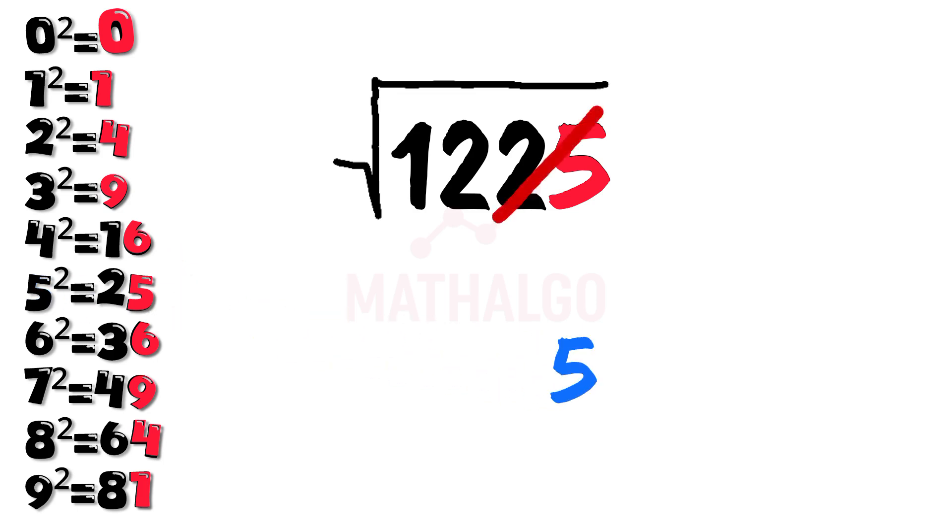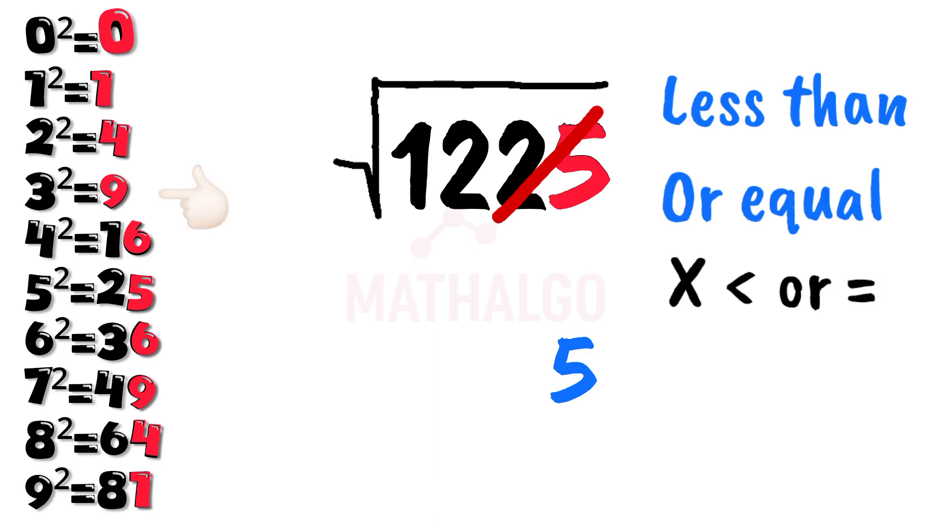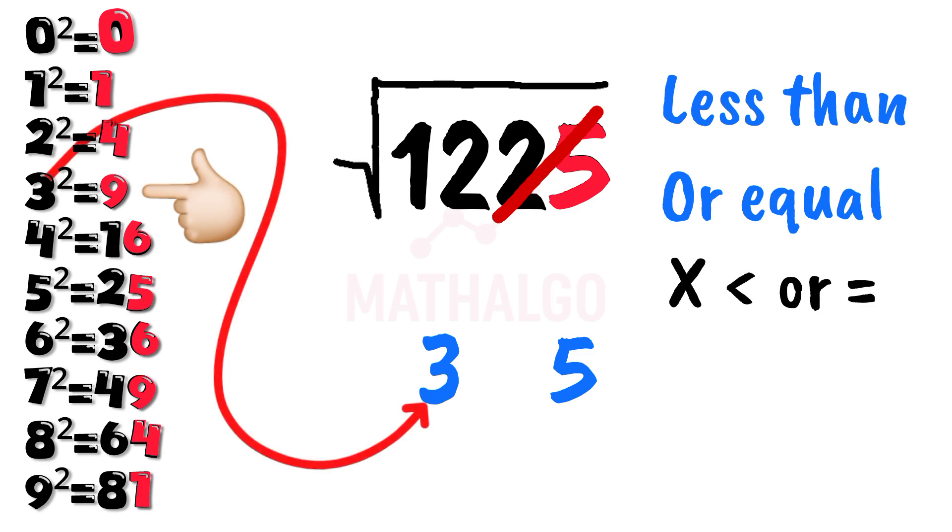Next, we cross out the last two digits. Now we're left with 12. Find the biggest square less than or equal to 12. That would be 9, which is 3 squared. So we write down 3. And there's our final answer, 35.